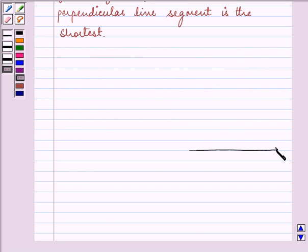It says that from point P there is one perpendicular line on the line L and there is one slanting line PN. Let this be PN.